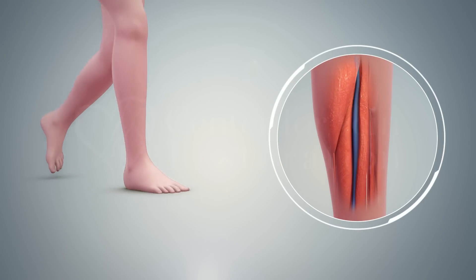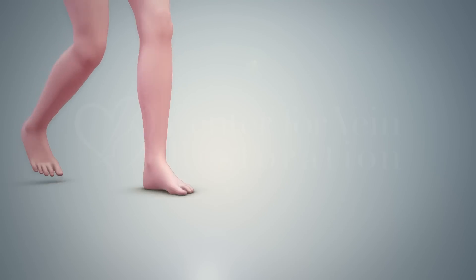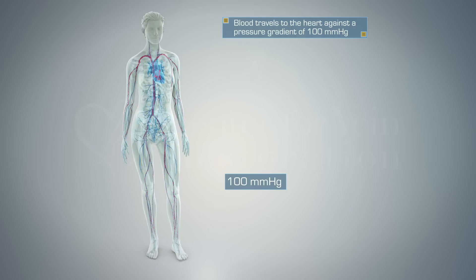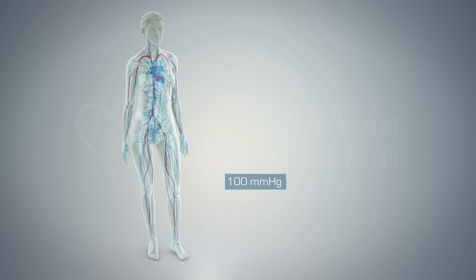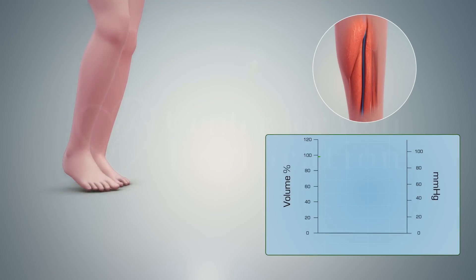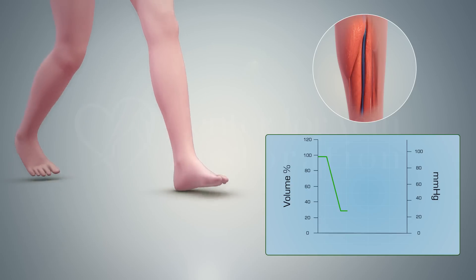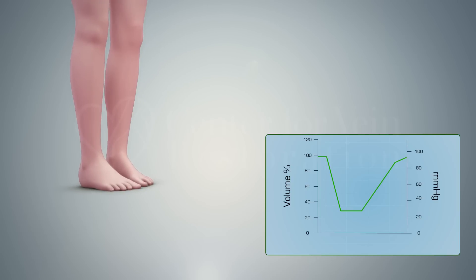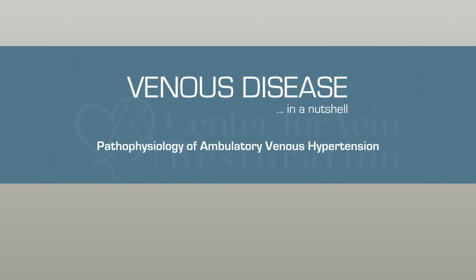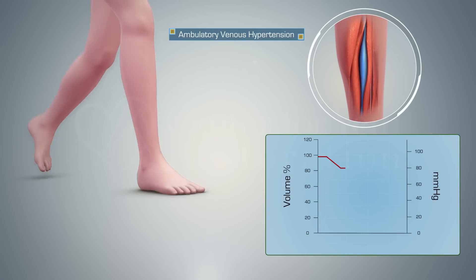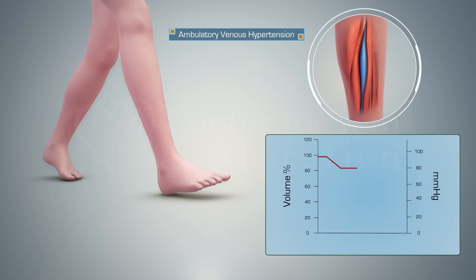The second, probably even more important mechanism, is the blood pumping action of the calf muscle when we walk. Blood has to travel back to the heart against a pressure gradient. To facilitate this arduous journey, the calf muscle pump is recruited to work when we walk. This pump propels blood away from the feet, causing the venous pressure in the foot to drop below 30 millimeters of mercury when we walk.